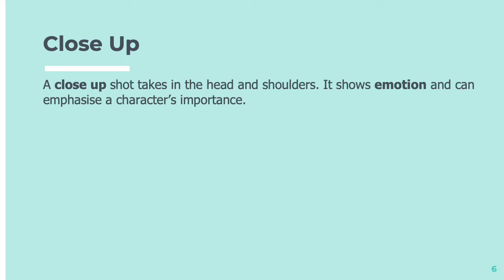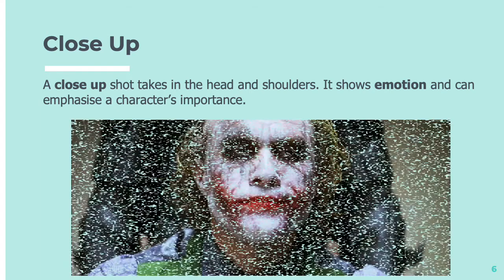So we're going to run through some of the different most important kinds of camera angles that you might need to know. We're starting with a close-up. A close-up is a shot that takes in just the head and shoulders. It shows a lot of emotion on the person's face and can be used to emphasize a character's importance. So here's an example of a close-up.